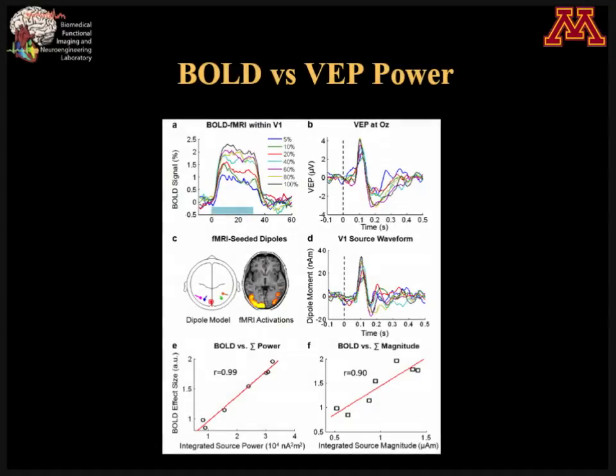By changing the contrast, you can see that the BOLD response changes, and the electrical response also changes. By doing source imaging — localizing the source in the visual cortex — we compared the BOLD effect size and the integration of the source power, the left and right-hand sides of the equation we derived. We were pleased to find the correlation between these two was as high as 99%, suggesting that the theoretical relationship we derived works well, at least for the visual cortex in an event-related paradigm. We do not know yet for spontaneous activity, as that represents another challenge.